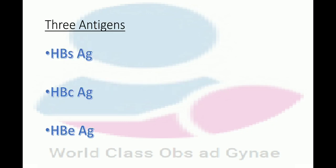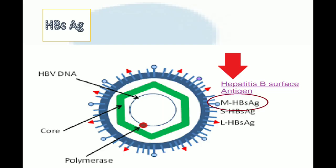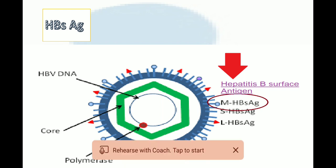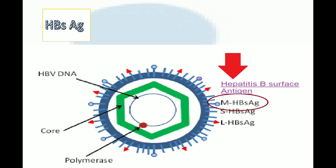First of all, you need to understand that we have three antigens in hepatitis serology, and those three antigens are HBs antigen, HBc antigen, and HBe antigen. HBs antigen, as the name indicates, is basically hepatitis B surface antigen. You can see in this virus picture of hepatitis that on the surface we have HBs antigen, and it shows an active infection.